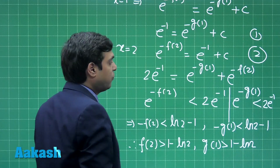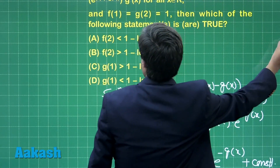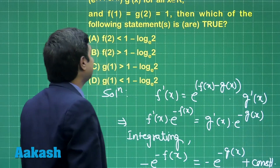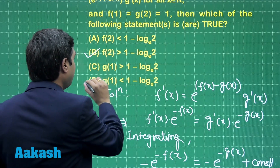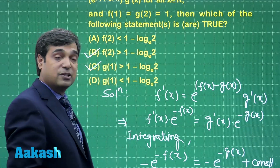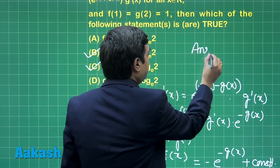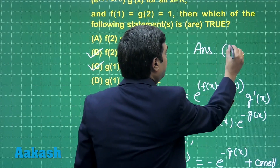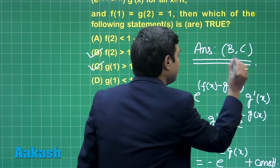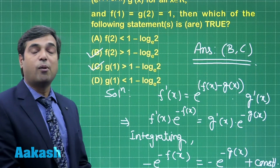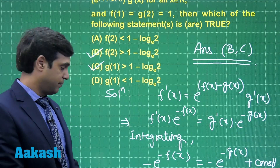We finally obtain f(2) is greater than 1 minus log 2, and g(1) is greater than 1 minus log 2. Looking at the four options, f(2) greater than 1 minus log 2 and g(1) greater than 1 minus log 2. So the correct answers are options B and C. Now moving to the next question, that is question number 6.